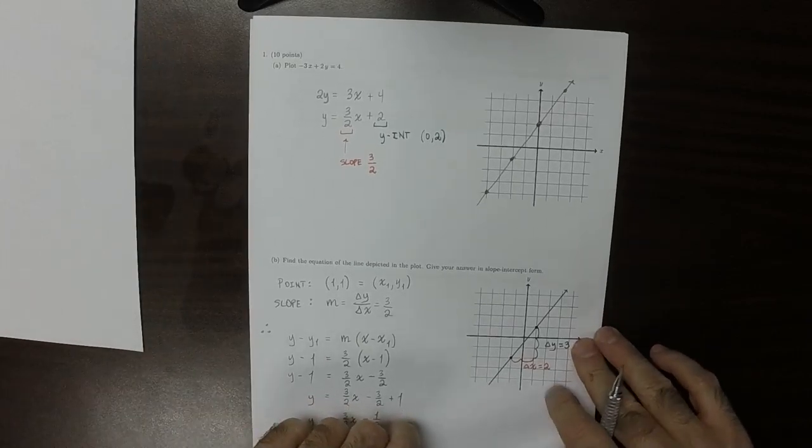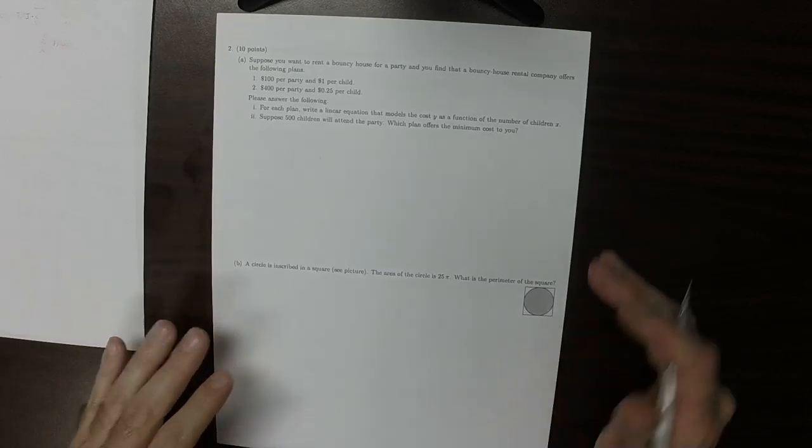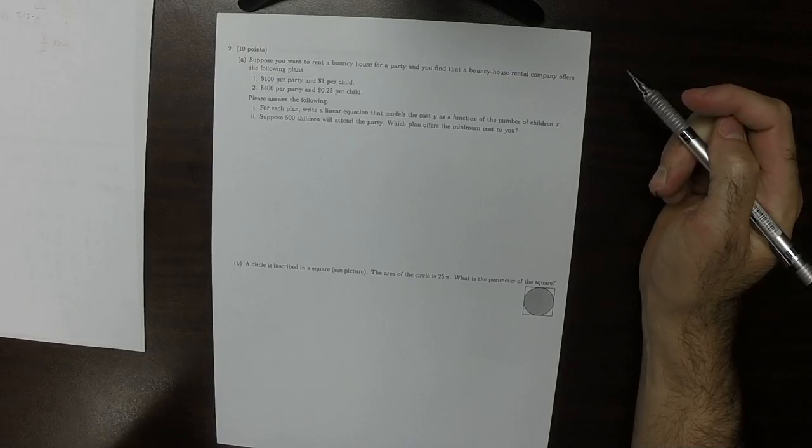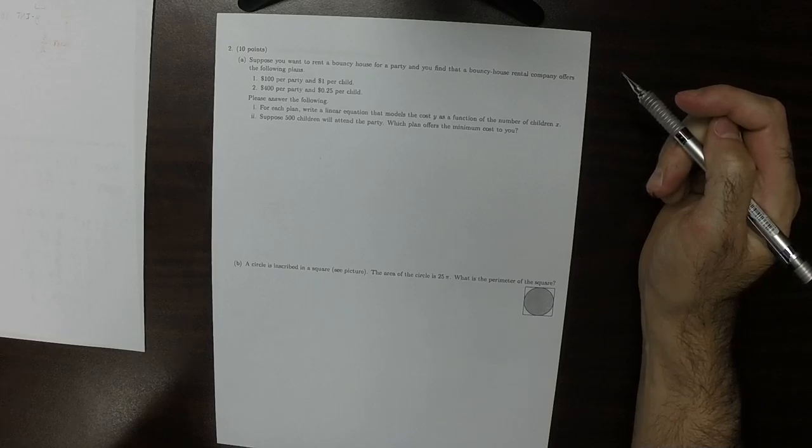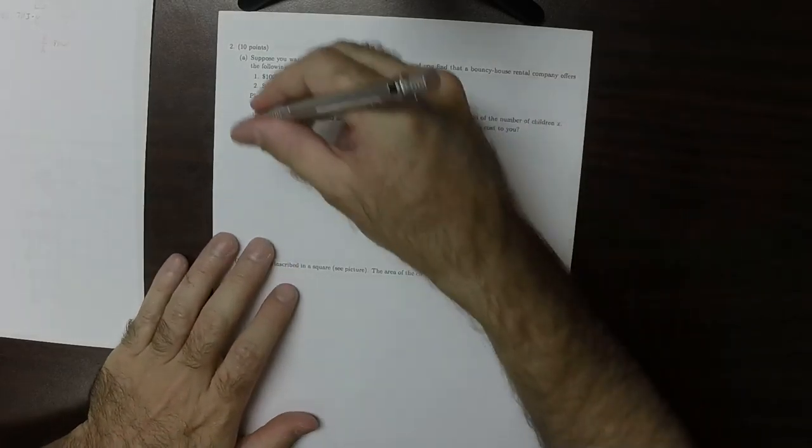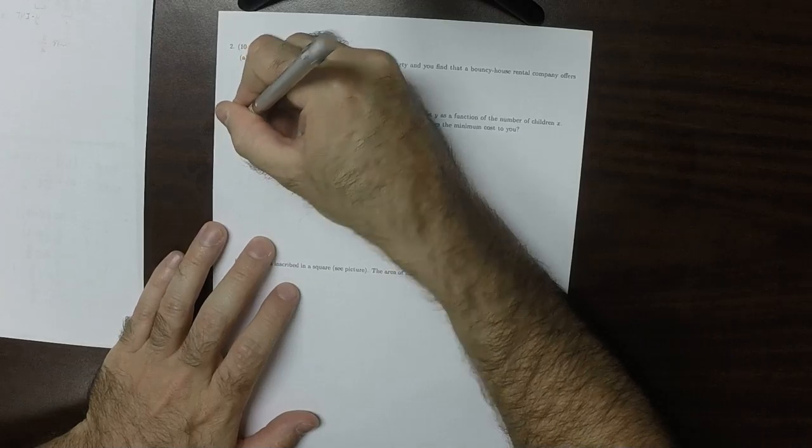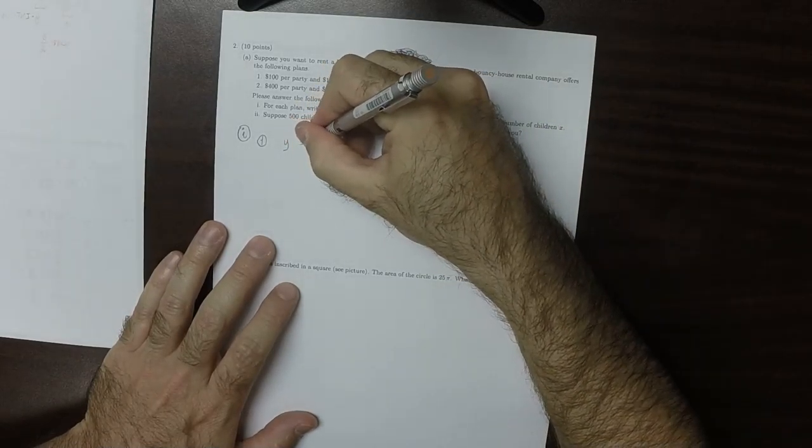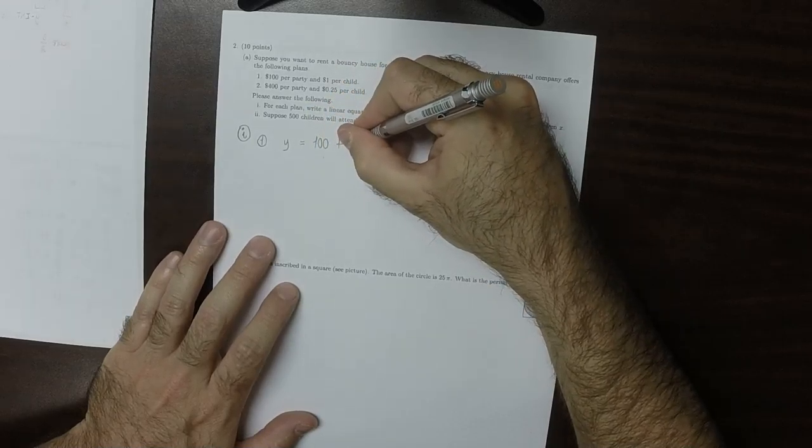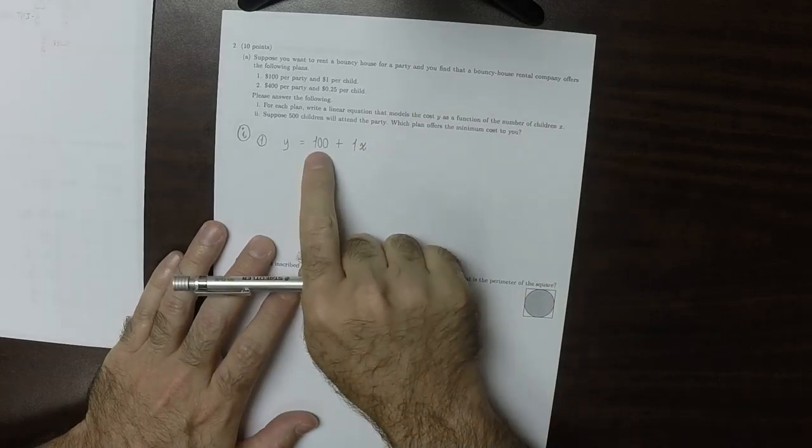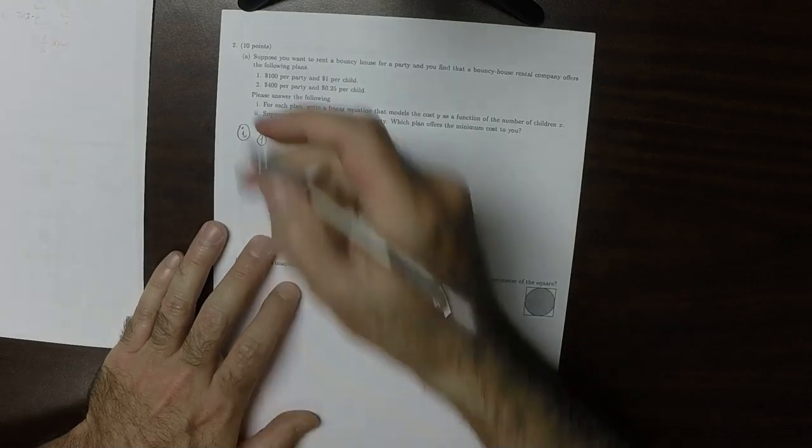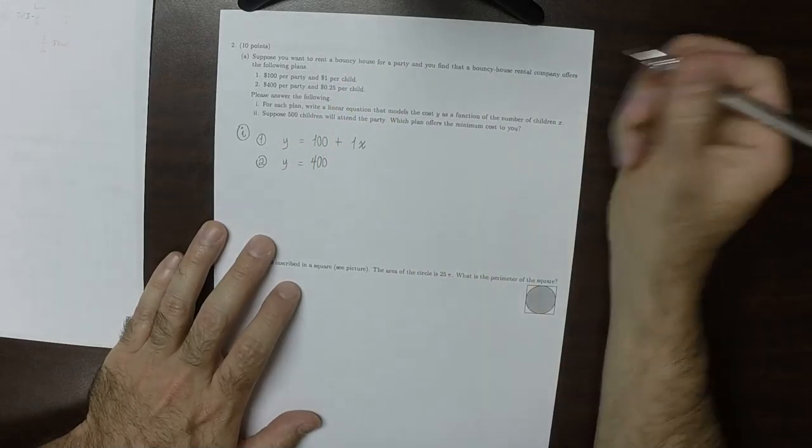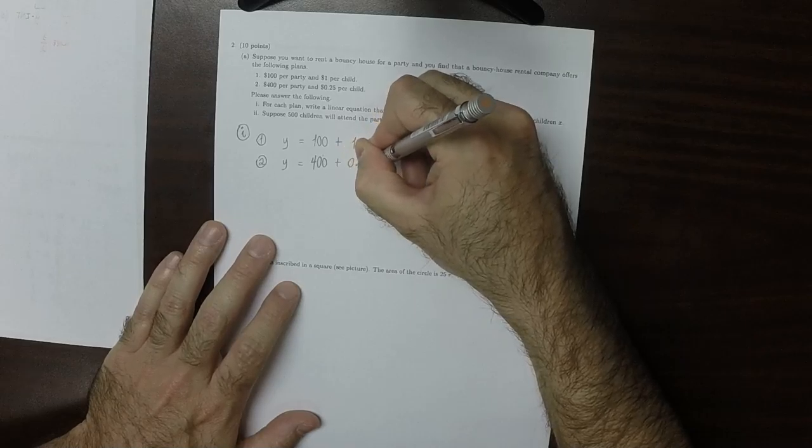Next. So we're given a rental offer. For each plan, write a linear equation. So for plan 1, y, the cost is 100 plus 1 times x, because it's $100 per party plus $1 for every child. And then for plan 2, that would be $400 for a party plus 0.25x, because it's $0.25 per child.